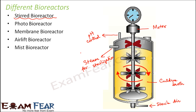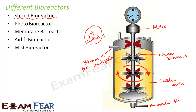The pH controller adjusts the medium from acidic to basic. There is also a temperature controller and a foam control system. The blades visible here are foam breakers. The reactor is cylindrical in shape with a curved base, which enables good mixing of the reactor contents and facilitates oxygen availability. It has a pH control system, foam control system, temperature control system, agitator system, and oxygen supply systems.